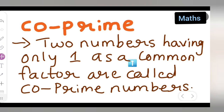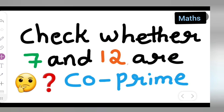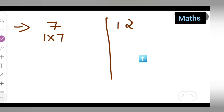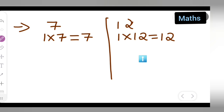So two numbers having only one common factor — that is the definition of co-prime. Now let us check whether 7 and 12 are co-prime. Here we have 7 and here we have 12. I will write: 1 sevens are 7, and 1 twelves are 12.